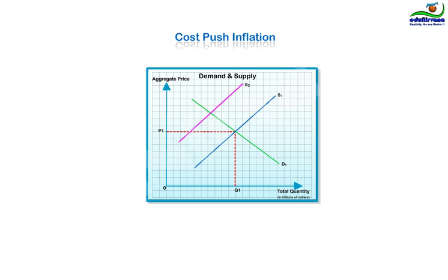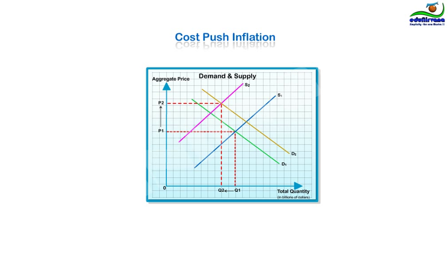Whereas demand from households will rise at its normal pace from D1 to D2, owing to factors such as increase in population, etc. Hence, the prices will rise from P1 to P2 and quantity produced in an economy reduces from Q1 to Q2.